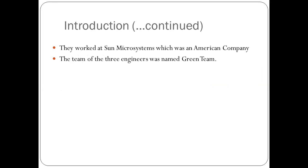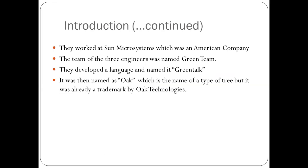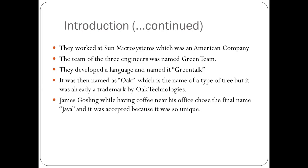The team of three engineers was named the Green Team. They developed a language and named it Green Chalk. It was then named Oak, which is the name of a type of tree, but it was already a trademark by Oak Technologies, so they had to find a new name for the language. James Gosling was very fond of having coffee and while having coffee near his office, chose the final name Java, and it was accepted because it was so unique.